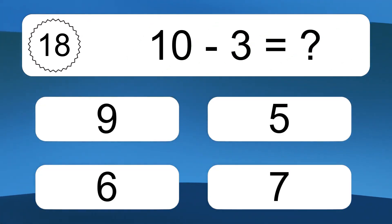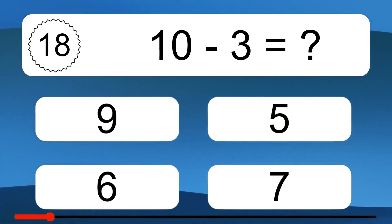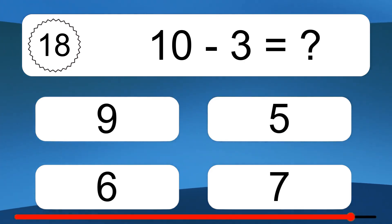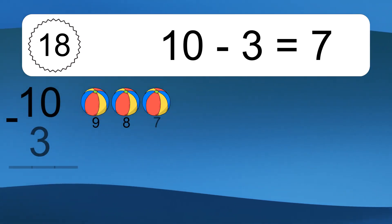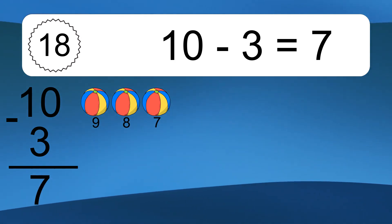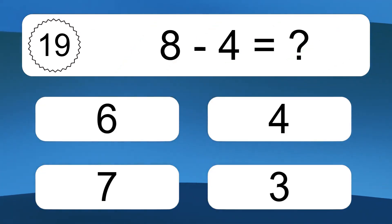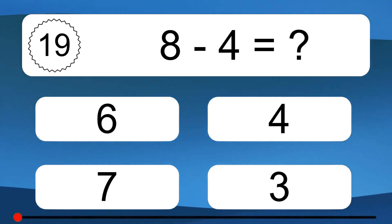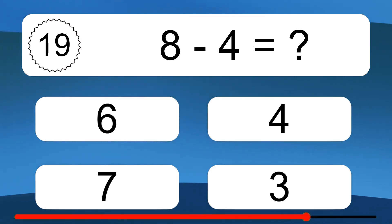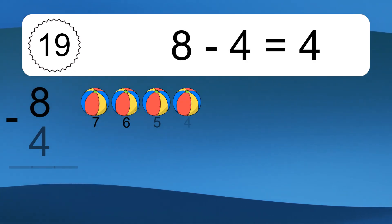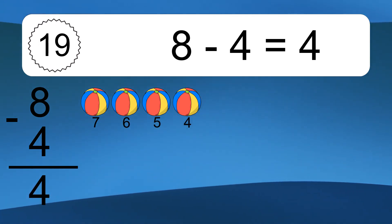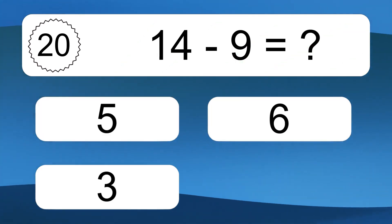5 minus 4 equals what? 10 minus 3 equals 7. Let's count it. 9, 8, 7. 8 minus 4 equals what? 8 minus 4 equals 4. Let's count it. 7, 6, 5, 4.